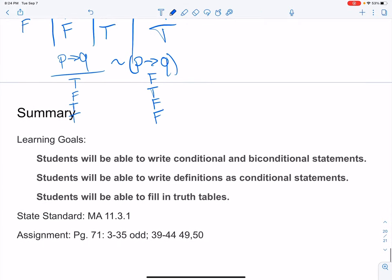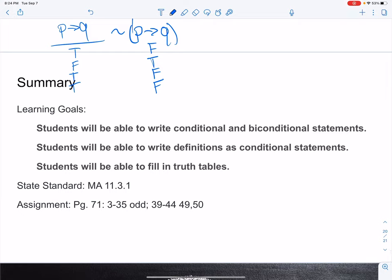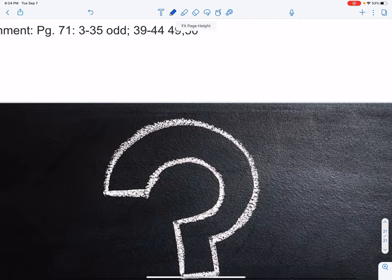So for the lesson, again, our learning goals were to be able to write bi-conditionals, be able to write definitions as conditionals or bi-conditionals, and be able to fill in a truth table. Your assignment is posted. You guys should be able to do this. Remember, always ask questions if you have any. Thanks guys, and good luck.